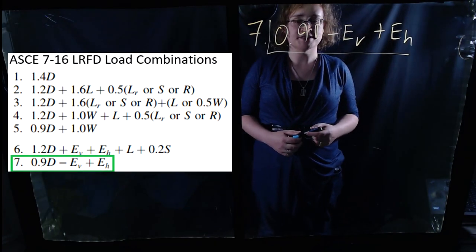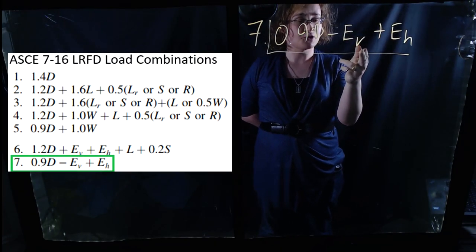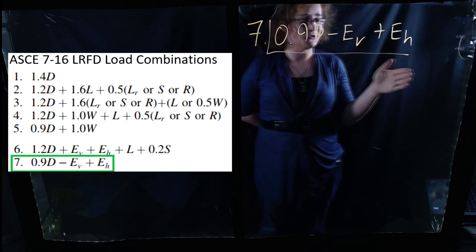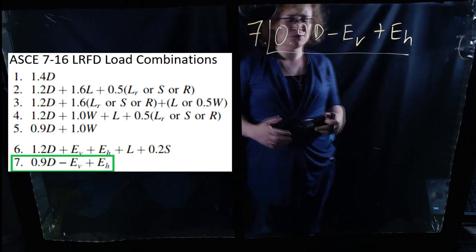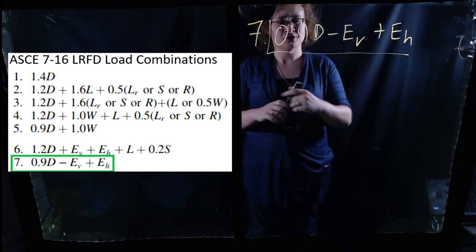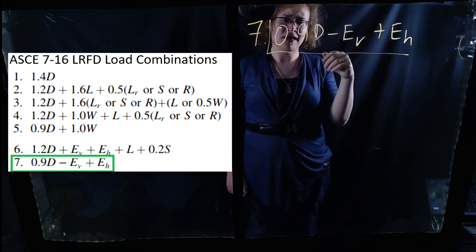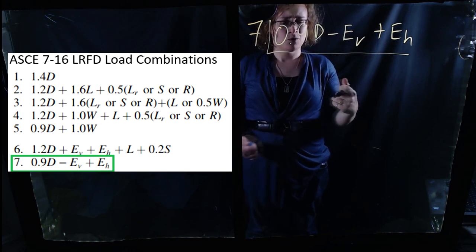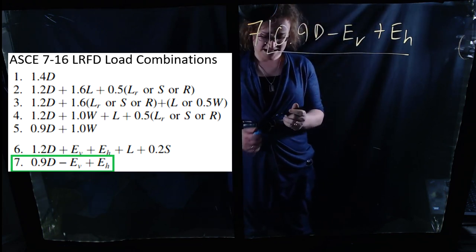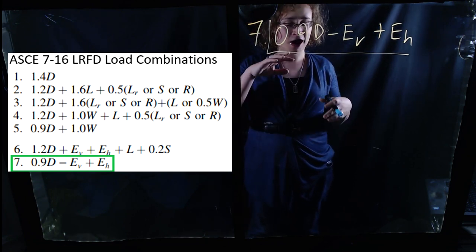Finally, we have load combination number 7: 0.9 times the dead load, minus the vertical earthquake loading, plus the horizontal or lateral earthquake loading. What's going on here again? Here we see the same kind of reduced dead load — and this time we have the seismic load subtracted. Just like with the previous case of roof uplift, in this case we're considering earthquake acting in the opposite direction of gravity.